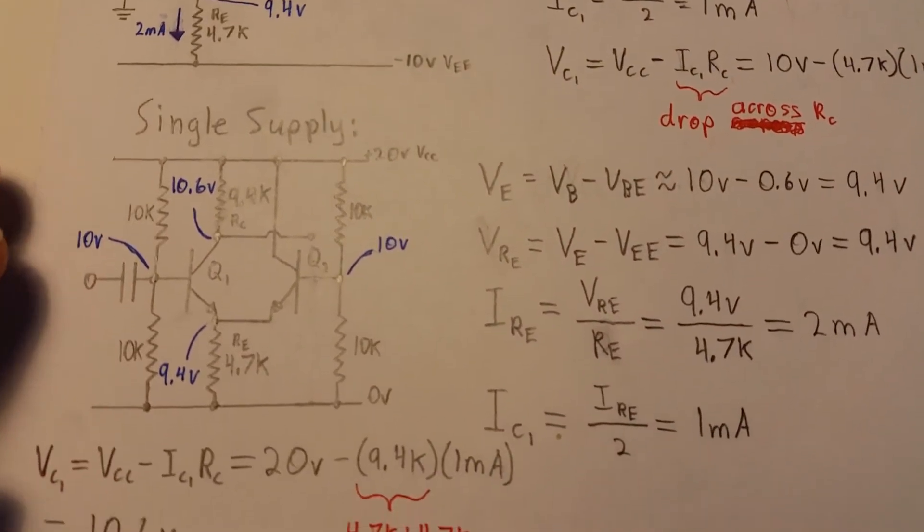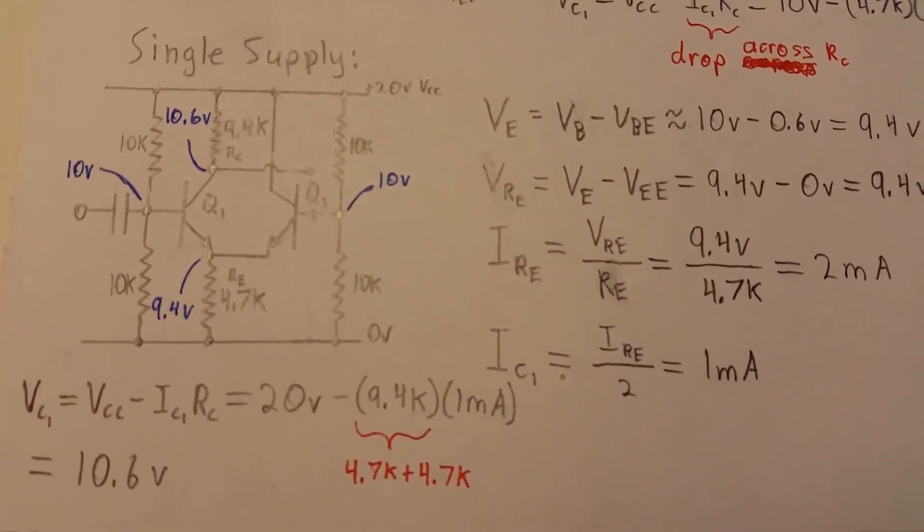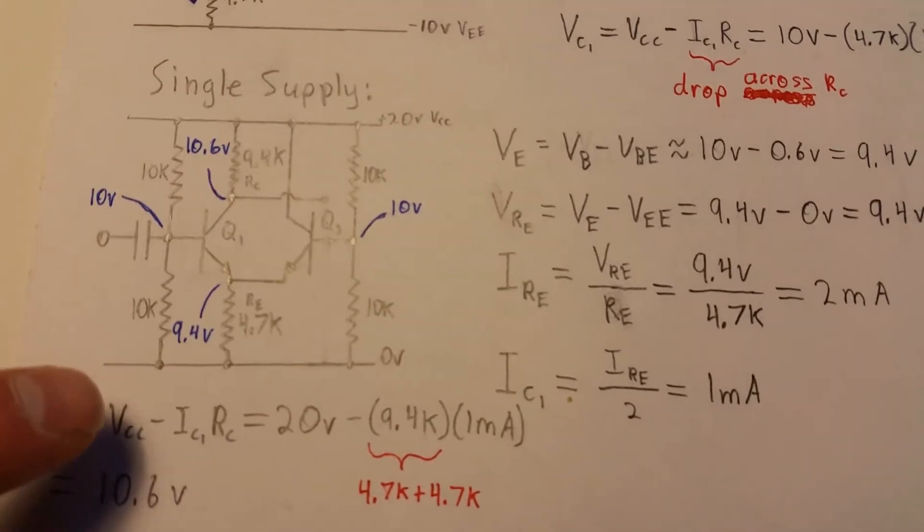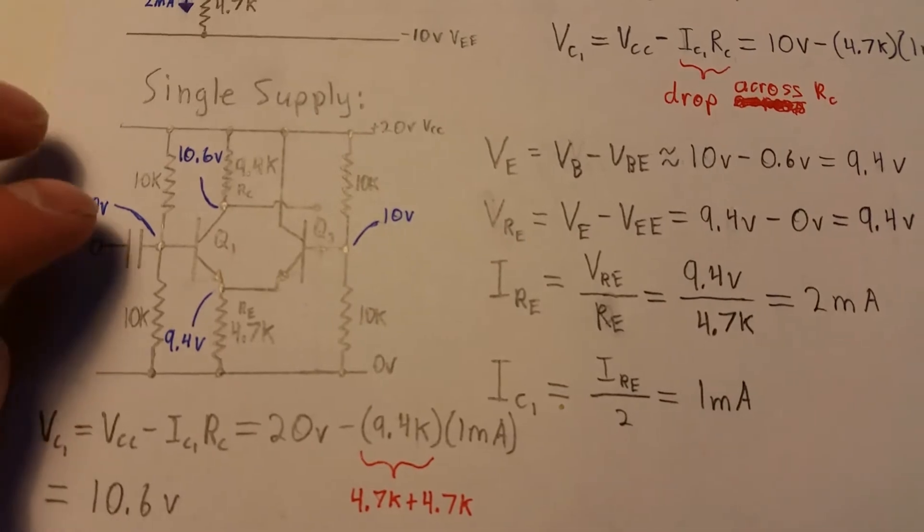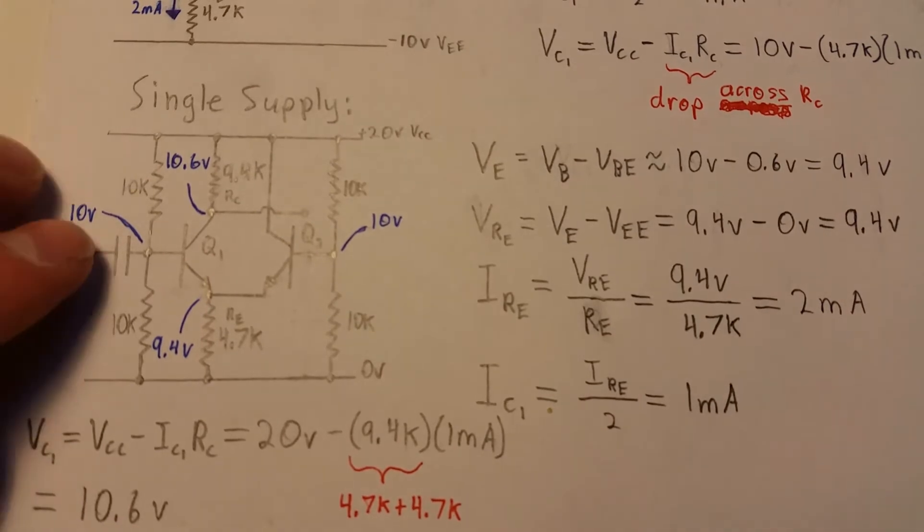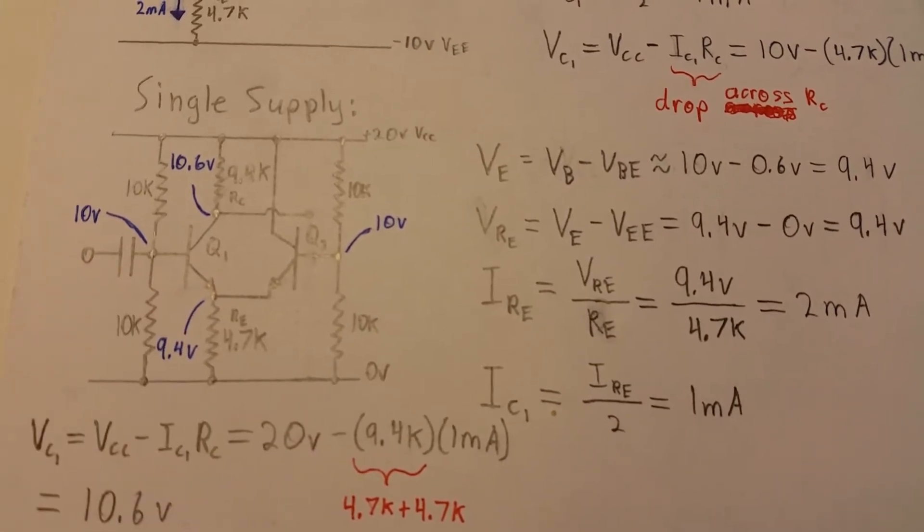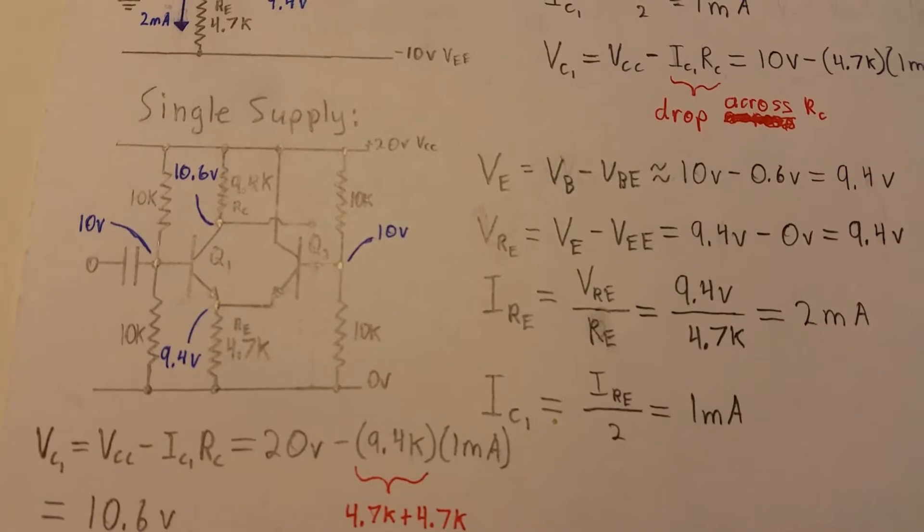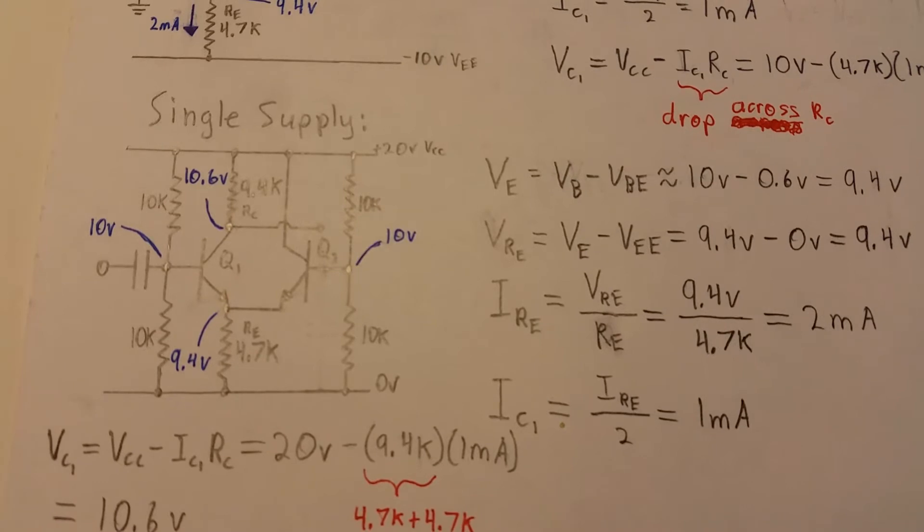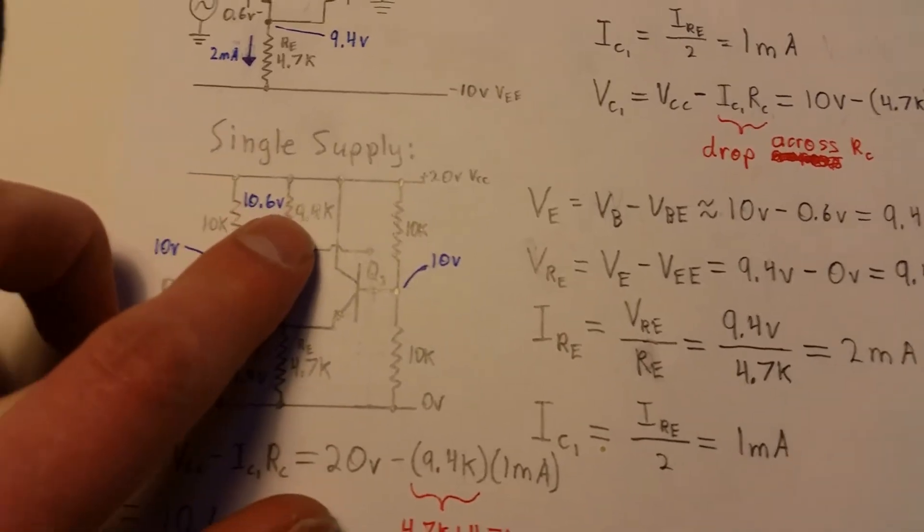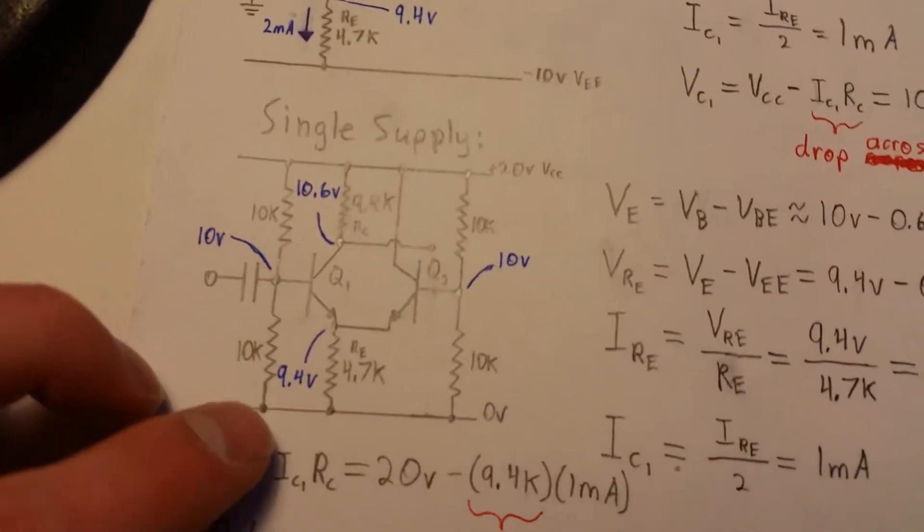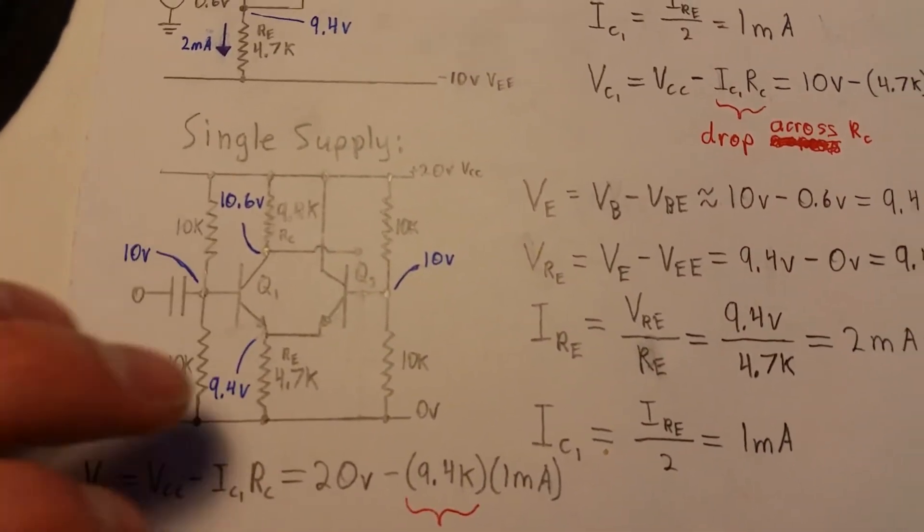This can be implemented with a single supply, but the voltages get shifted around a little bit. You still use 20 volts total, so you have a 20-volt rail and a zero-volt rail. Then you'll have just two 10Ks to give 10 volts on each base there. This may or may not be the best way to do this, but just for demonstration purposes, this should work. I have a 9.4K resistor as the collector resistor.